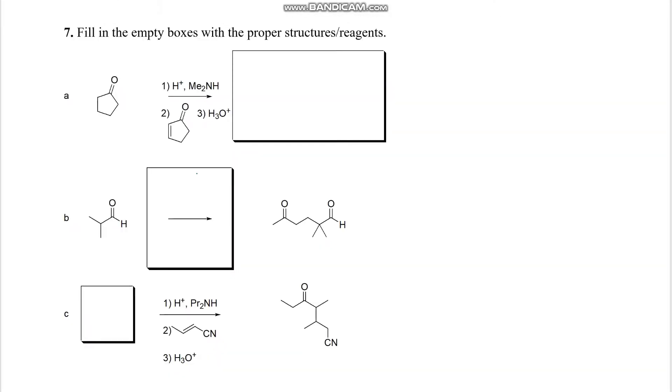Number seven, we're simply filling in the boxes with the proper structures or reagents. So I like to just draw a line from that alpha hydrogen to the number four carbon and just make that connection.